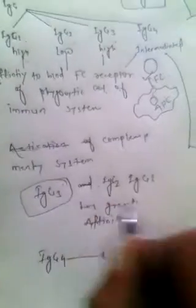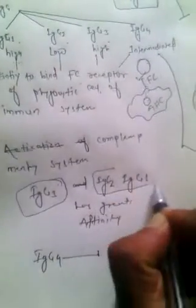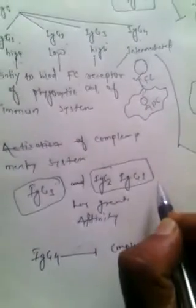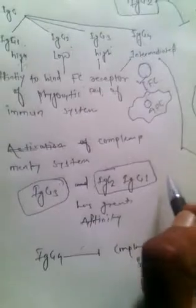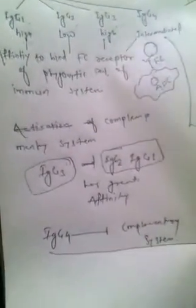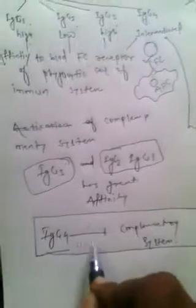For activation of the complementary system, IgG3 has great affinity. IgG1 and IgG2 have intermediate ability to activate or take part in the complementary system, while IgG4 does not activate the complementary system at all.